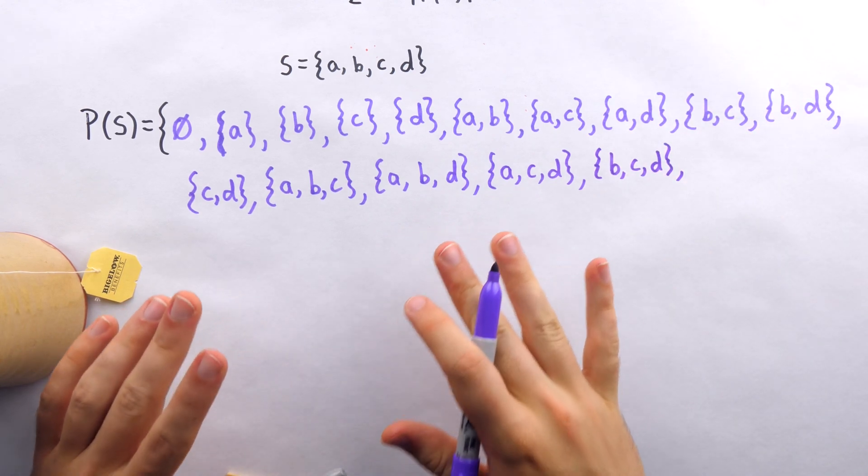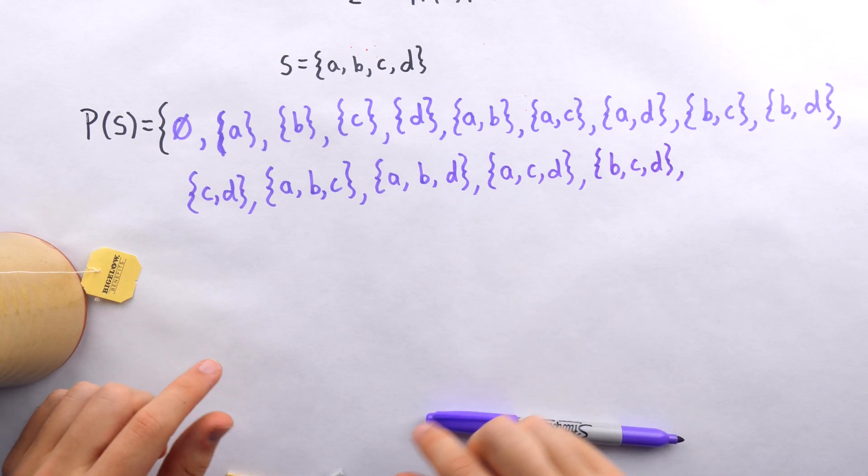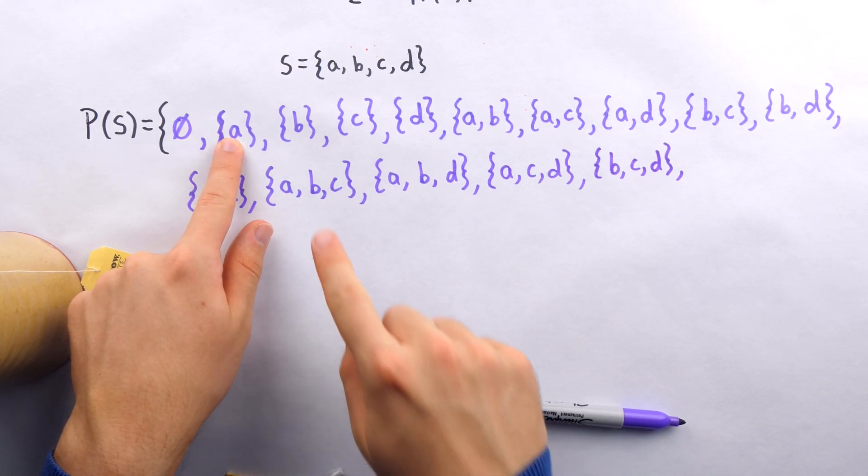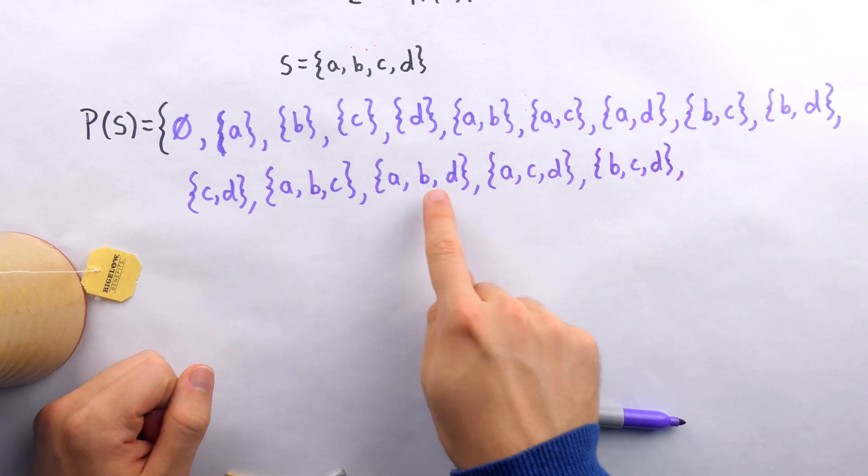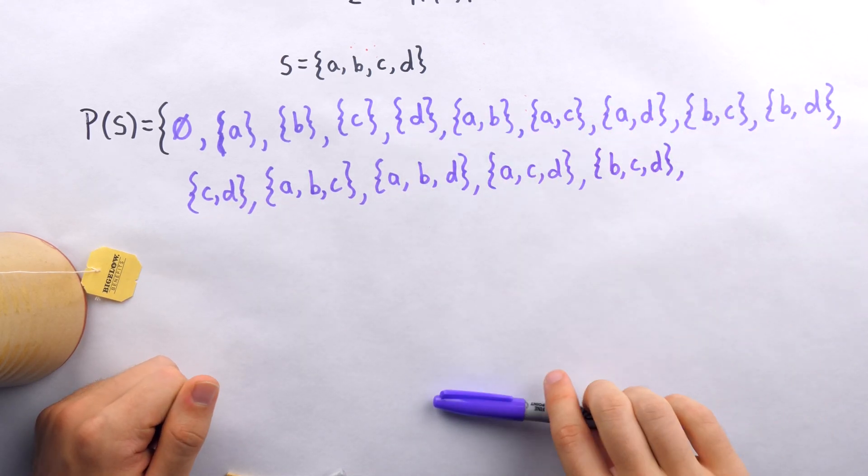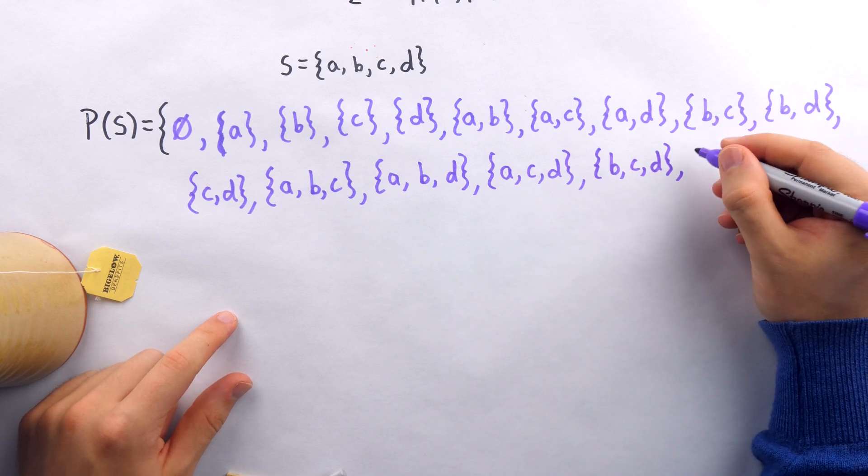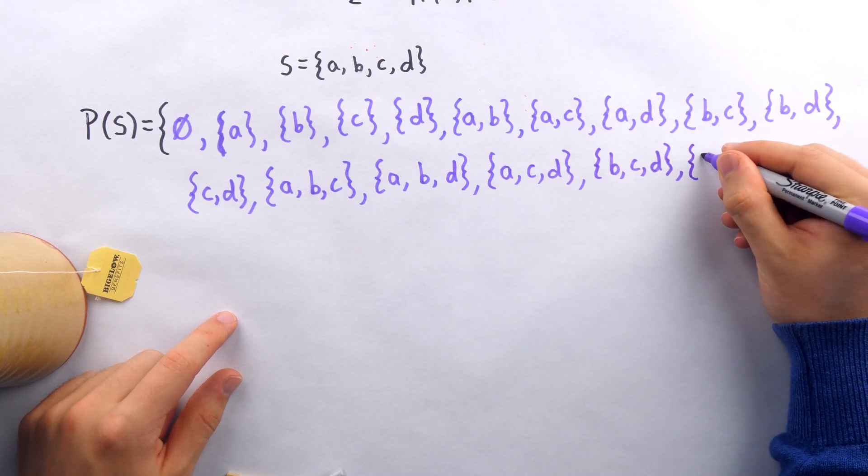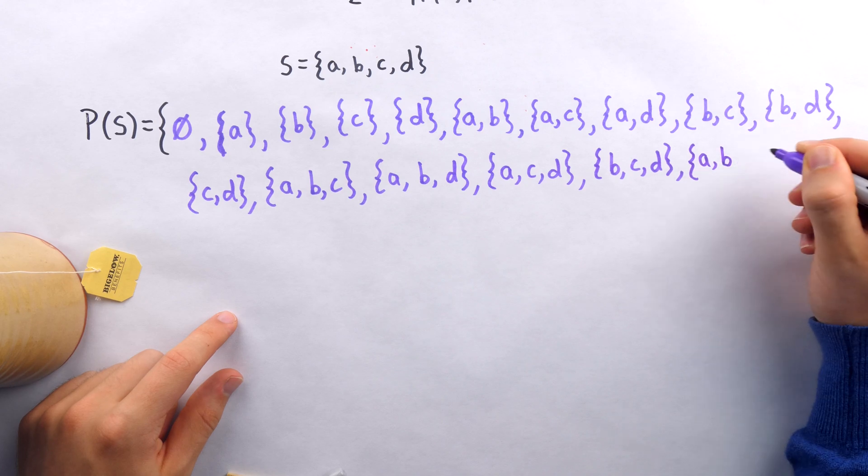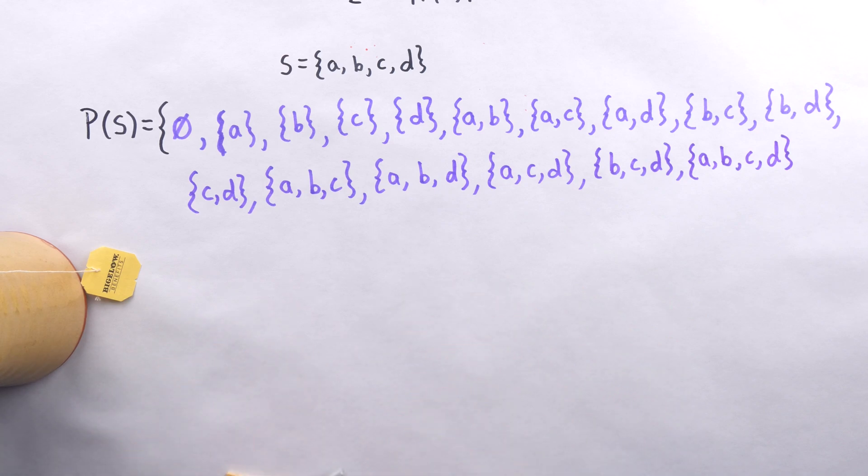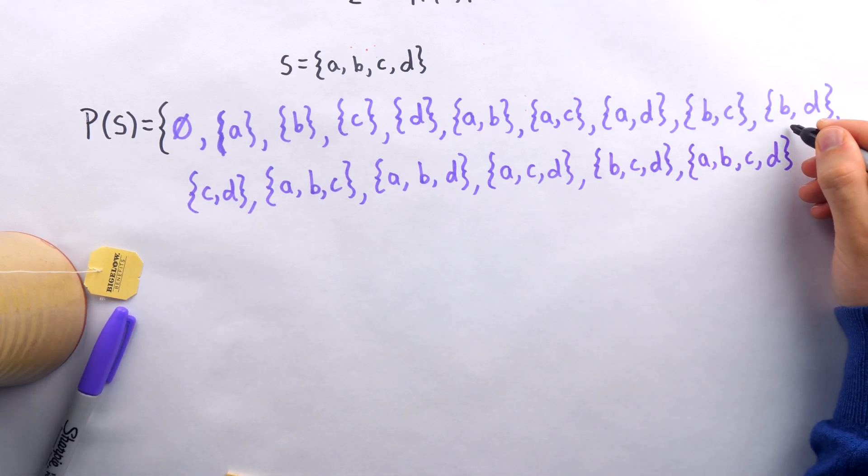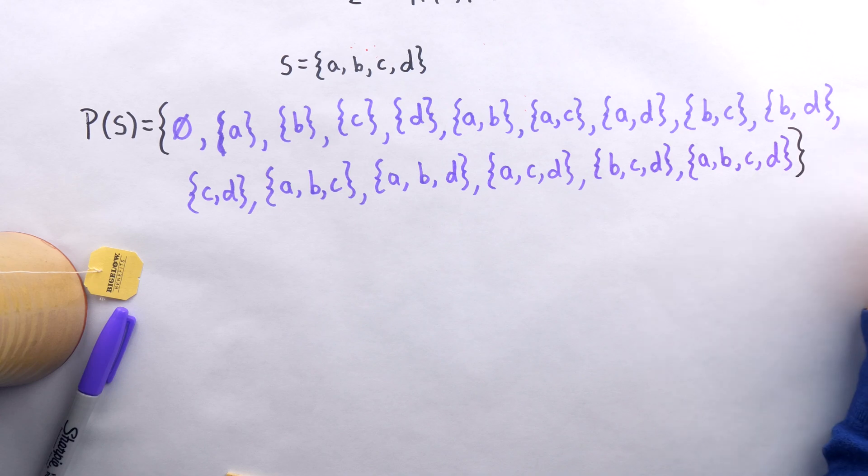So let's count everything up. We should have 15 subsets right now inside of our power set. 1, 2, 3, 4, 5, 6, 7, 8, 9, 10, 11, 12, 13, 14, 15. Look at that, works like a charm. Finally, I can put the entire set, the subset containing all four of the elements: A, B, C, and D. Nothing like spending Sunday writing out a power set with 16 elements. And then we can close this off with that black close bracket.